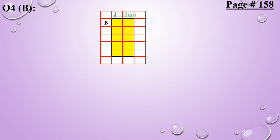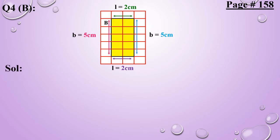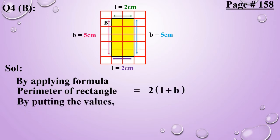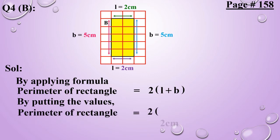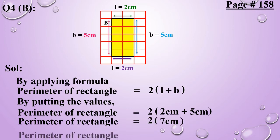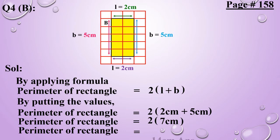Now we will do part B, which is a regular shape. Here L is given 2 cm and B is given 5 cm. First of all we will apply the formula, which is: perimeter of a rectangle equals to 2 into (L plus B). Putting the values: perimeter equals to 2 into (2 cm plus 5 cm). We always solve the bracket first, so perimeter equals to 2 into 7 cm, which gives perimeter of rectangle equals to 14 cm.